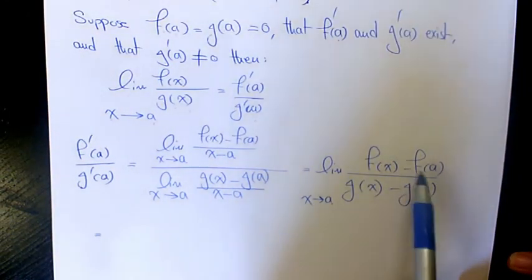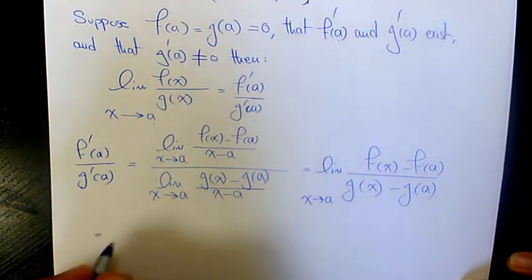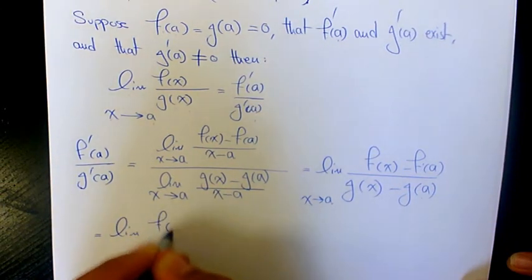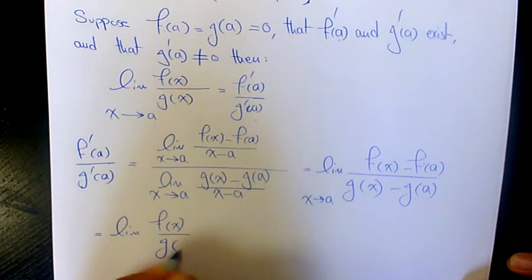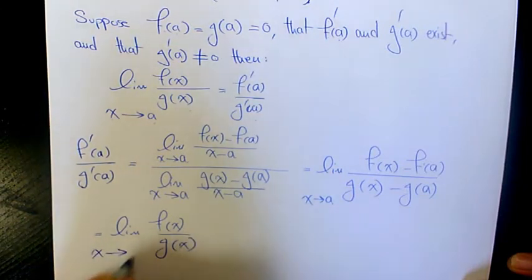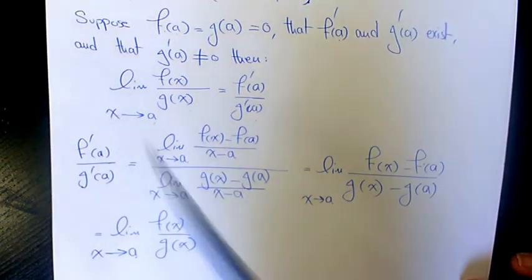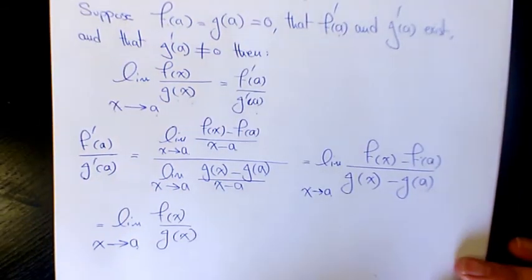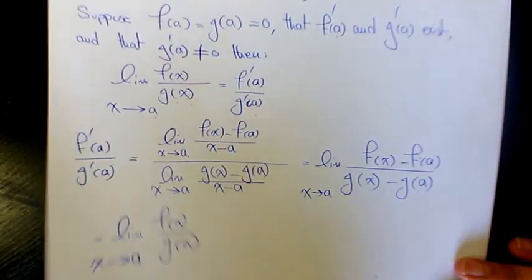Since f(a) and g(a) both equal 0, we're going to have limit of f(x) over g(x) when x approaches a. As you see here, that's exactly what we have. So that's how we prove it. Now let's find an example.